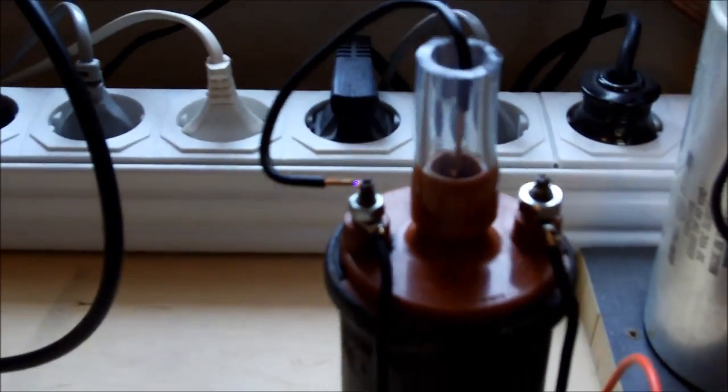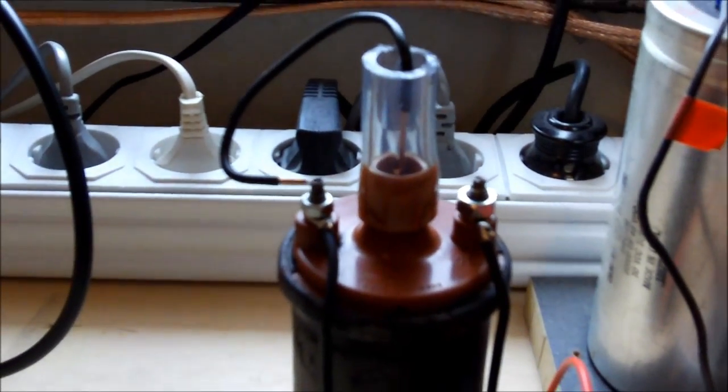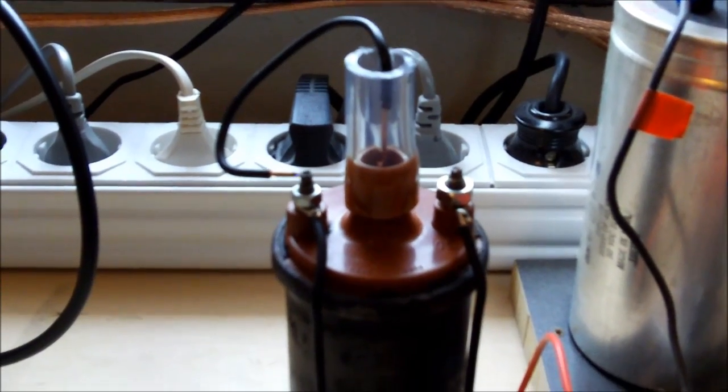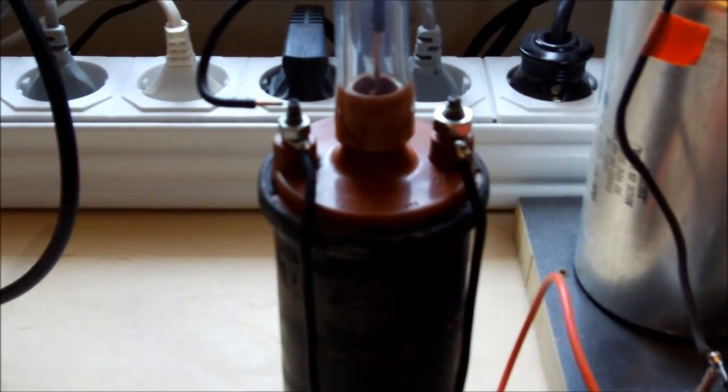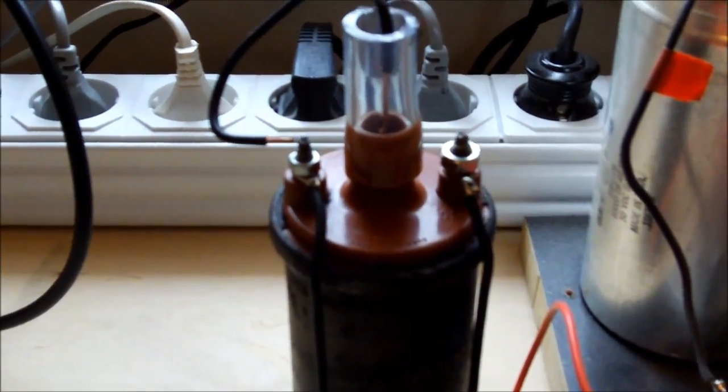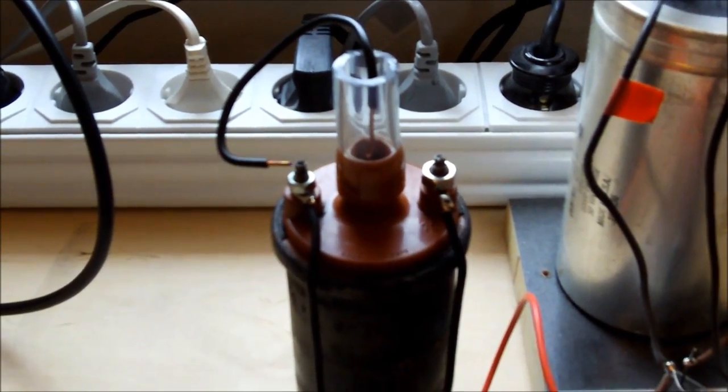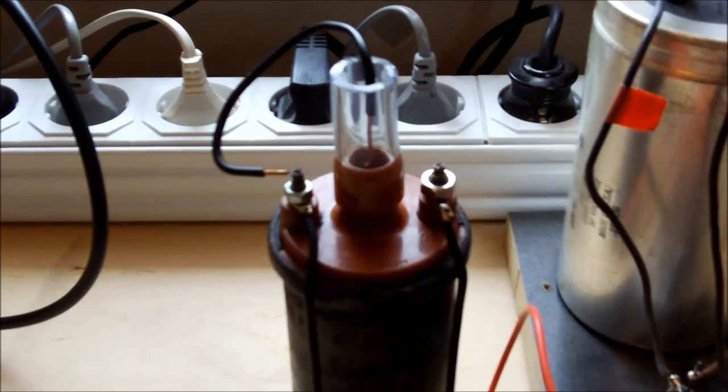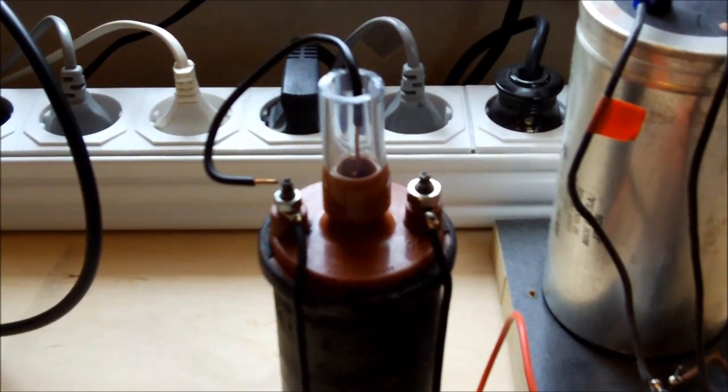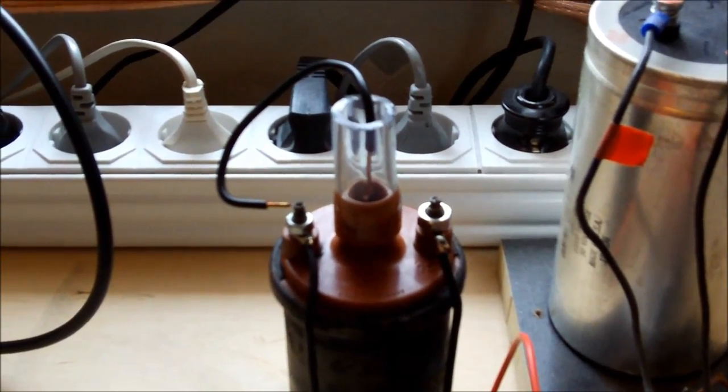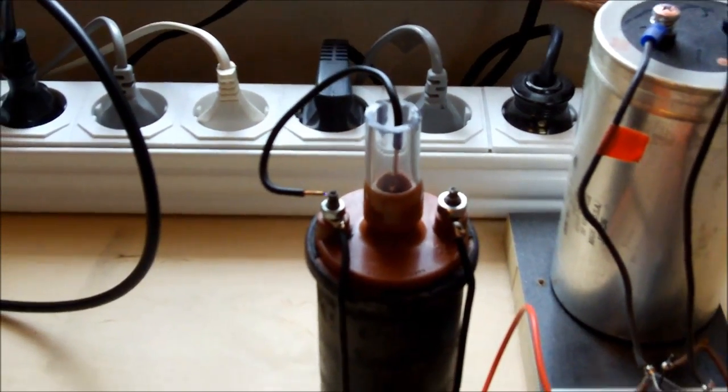So here we have the same test procedure. Just turn the distributor and the sparks will jump from the high voltage terminal of the ignition coil to one of the primary connectors. Well, that's all.